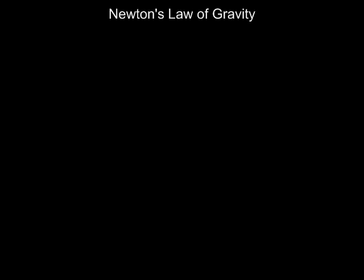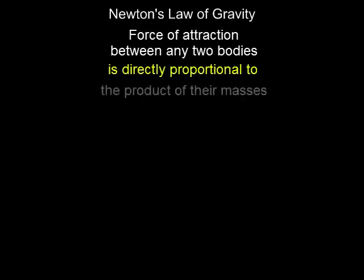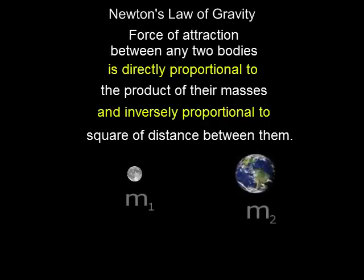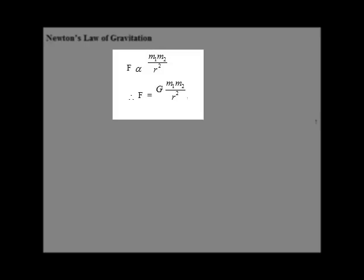The magnitude of this gravitational force is given by Newton's law of gravity. It states: the force of attraction between any two bodies is directly proportional to the product of their masses and inversely proportional to the square of the distance between them. Thus, if two bodies of masses M1 and M2 are at distance R from each other, then the force of attraction F between them is directly proportional to M1, M2 and inversely proportional to R square. Hence, F is given as G M1 M2 upon R square.